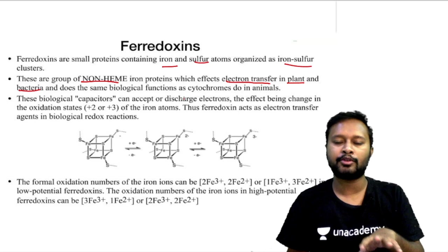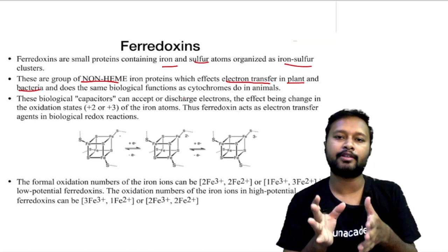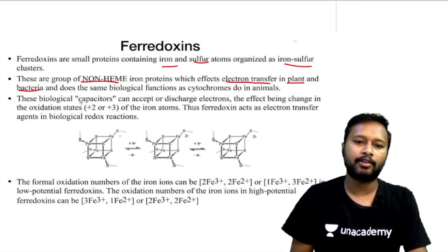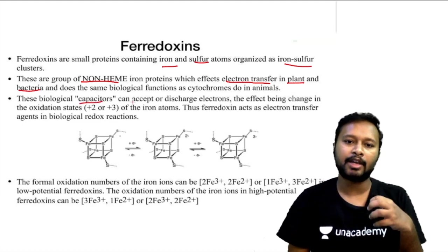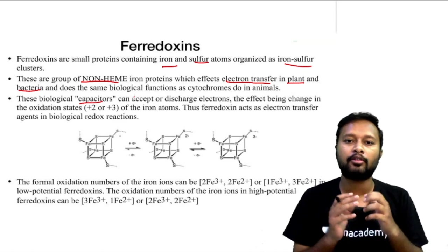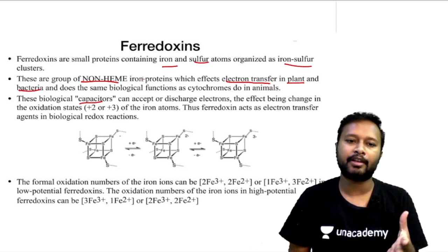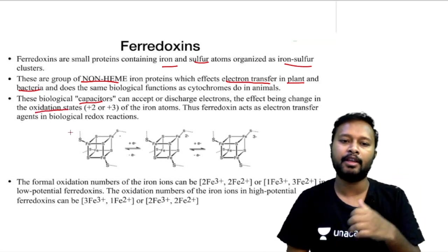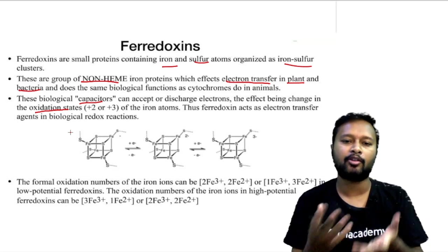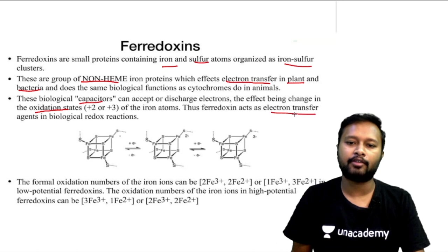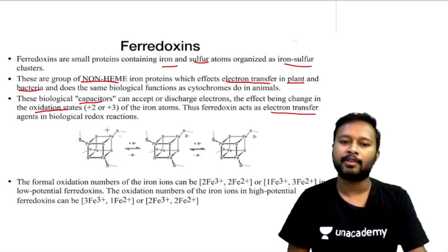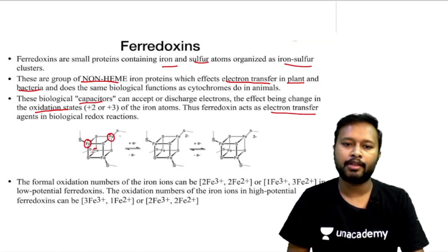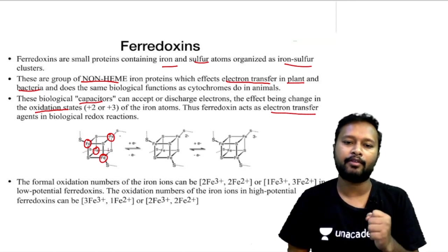Ferrodoxins do the same biological function as cytochromes do in animals. They are biological capacitors — they can store or release electrons through the change in oxidation state of iron from +2 to +3. In the cubane-like ferrodoxin, you have four iron atoms and the remaining four corners filled by sulfur, forming the iron-sulfur cluster.